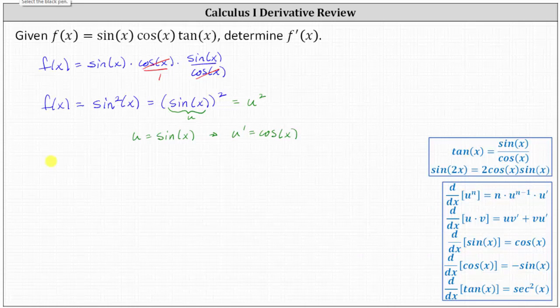In our case, f'(x) is equal to the derivative of u² with respect to x, which is 2 × u^(2-1) × u'. Let's write this back in terms of x. We have 2 × u¹, and u = sin(x), so we have 2sin(x), and then times u', where u' = cos(x).